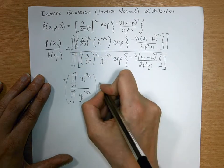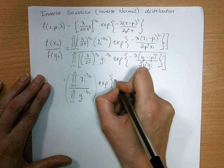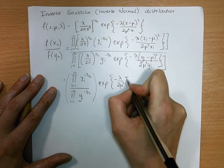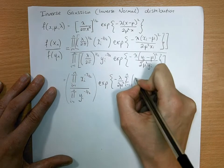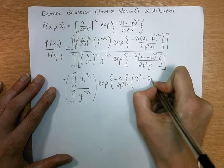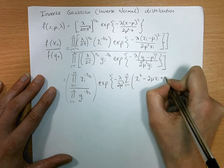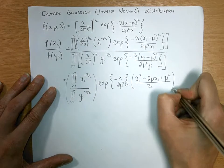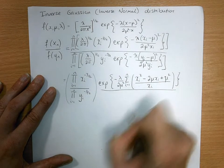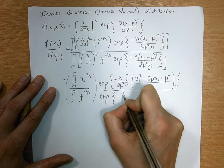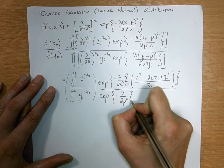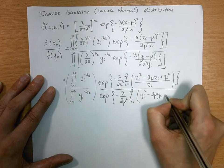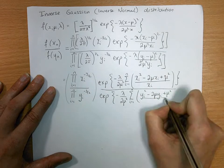Moving a product inside an exponential gives us a sum. Taking out common factors, we get the exponential of minus lambda over (2 mu squared), times the sum from i equals 1 to n of (x_i squared minus 2 mu x_i plus mu squared), all over x_i. The denominator has the equivalent exponential of minus lambda over (2 mu squared), times the sum from i equals 1 to n of (y_i squared minus 2 mu y_i plus mu squared), all over y_i.